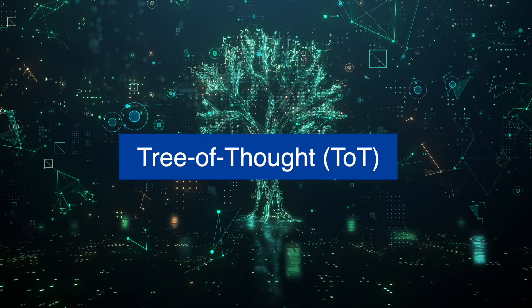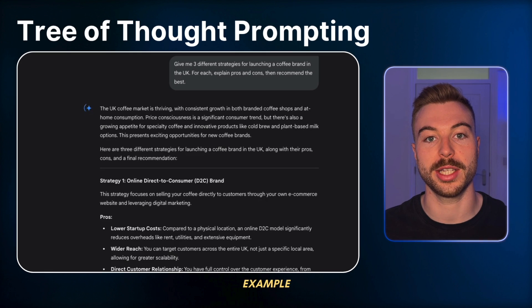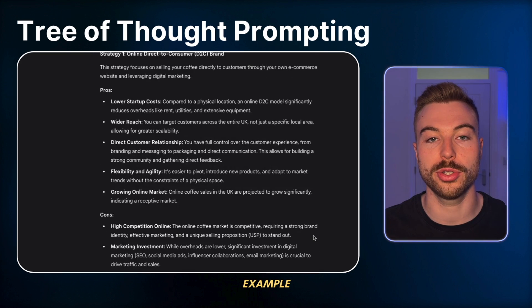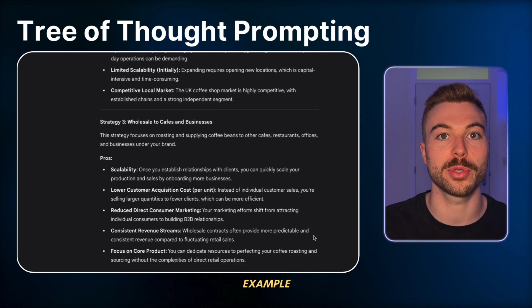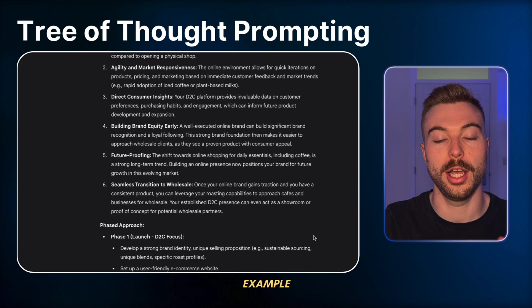The next one is tree of thought. Imagine asking the AI to explore multiple paths before choosing one. Example prompt: 'Give me three different strategies for launching a coffee brand in the UK. For each, explain the pros and cons and recommend the best.' This is really good for planning, decision making and creative brainstorming - it takes you from a blank template to a menu of different options, not just one idea. This works especially well with reasoning models like O3 from OpenAI, Gemini 2.5 Pro, and Opus from Claude to really get the best output possible.